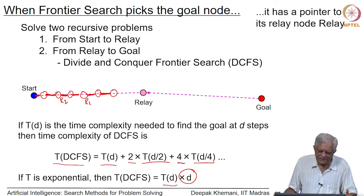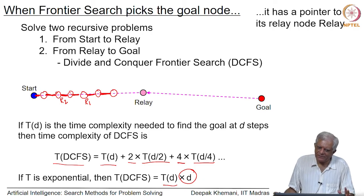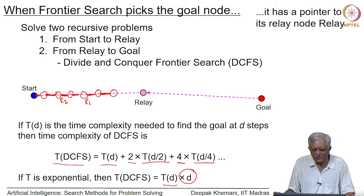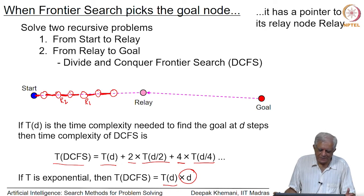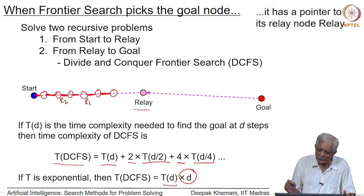This is a divide and conquer frontier search algorithm given by Korf and Zhang. What it says is: throw away the closed list, but at the halfway point maintain a layer of relay nodes. When you find the goal node, solve two recursive problems — one from the start node to the relay node that the goal node points to. This relay node in the diagram is a relay for the goal node essentially.